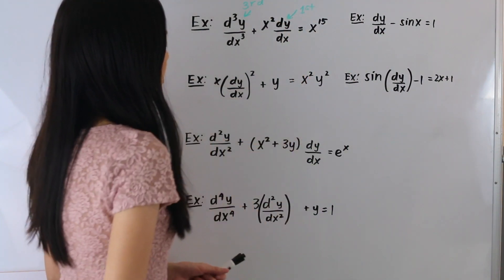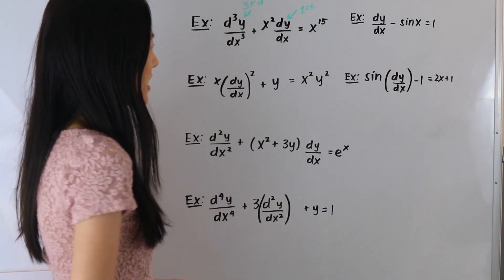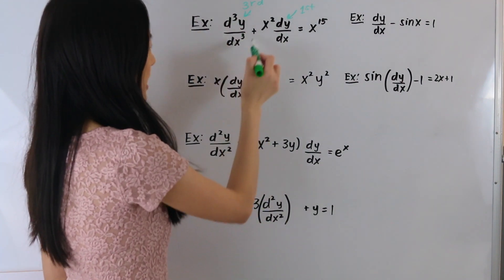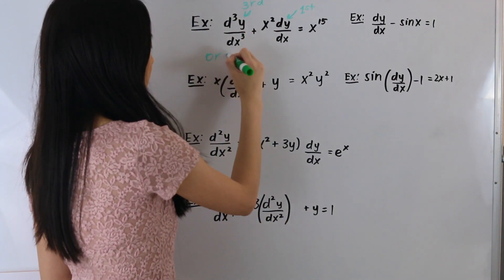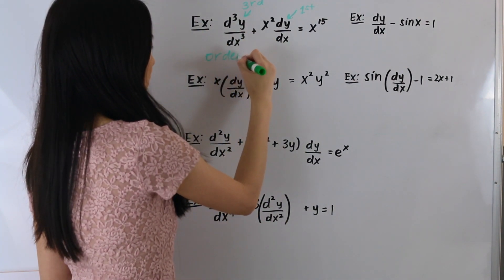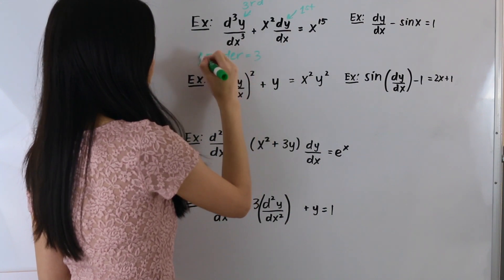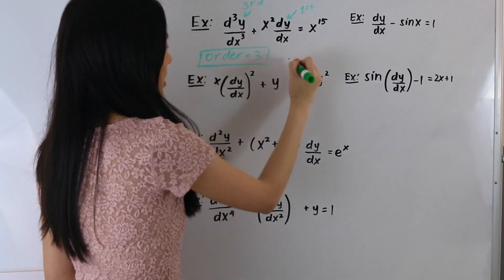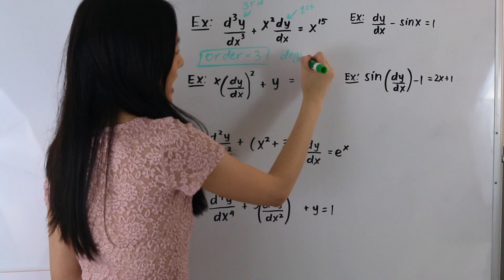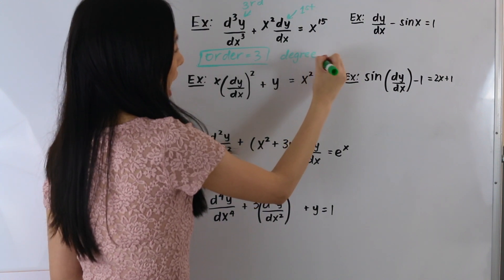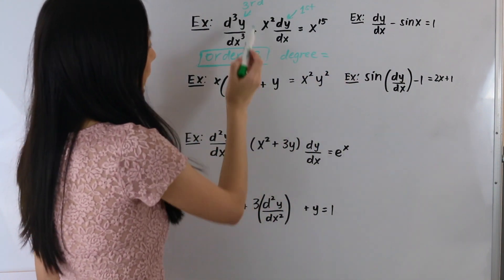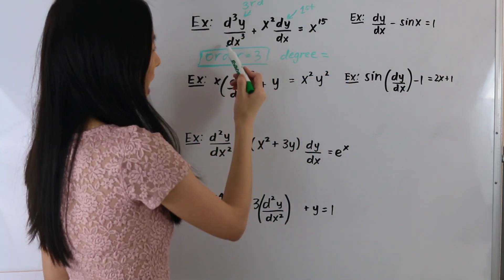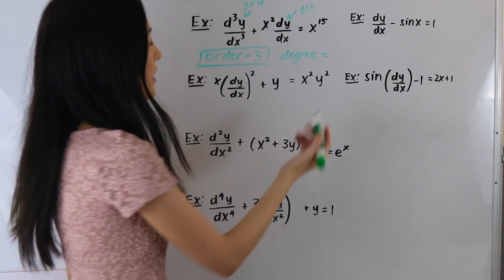The order of our differential equation is the highest order derivative, so it is third order. For the degree, we look at the power that our highest order derivative is raised to, and in this case it's just equal to 1.